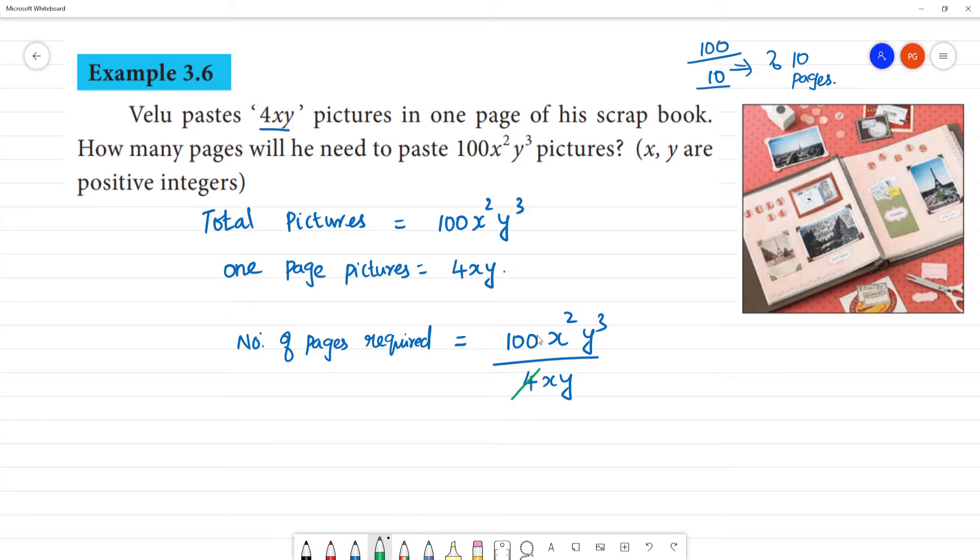Now we can cancel this 4. Here is 25. 100 divided by 4 is 25. Now we have x². So x² equals x to the 2 minus 1. We can see a to the power m divided by a to the power n is equal to a to the power m minus n.